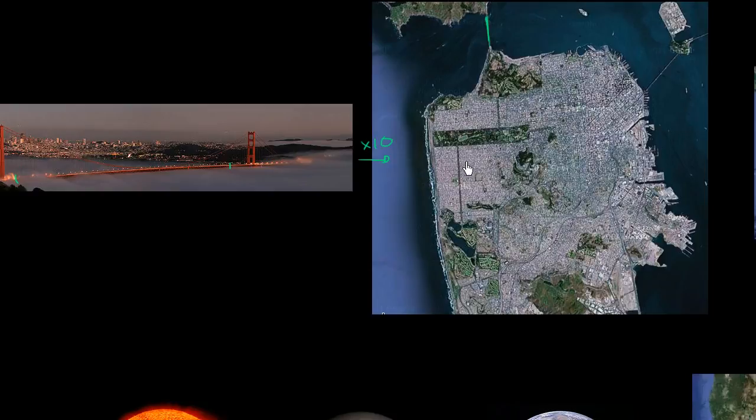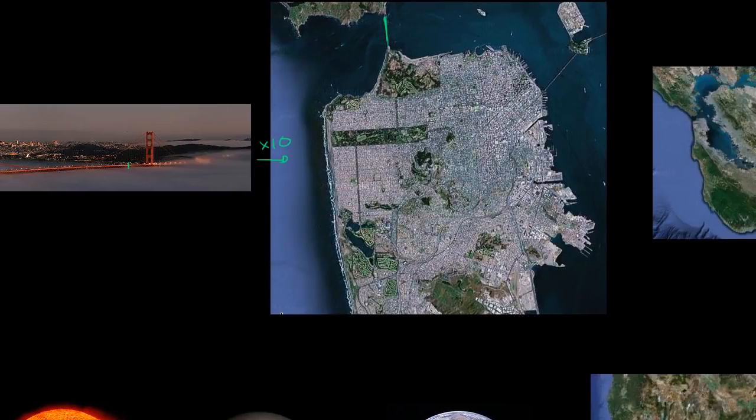But if I were to show a human on this, it would be unbelievably small. You wouldn't actually be able to see it. It would be less than a pixel on this image. A house is less than a pixel on this image. But let's keep multiplying by 10.